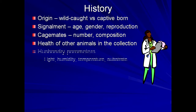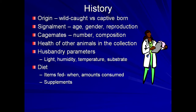A complete picture of the husbandry parameters is required, including types and placement of light sources, light cycle, humidity ranges, temperature gradients, and substrate used. Information about the diet is helpful, particularly what items are fed, how much food is actually consumed, and what supplements are being used.